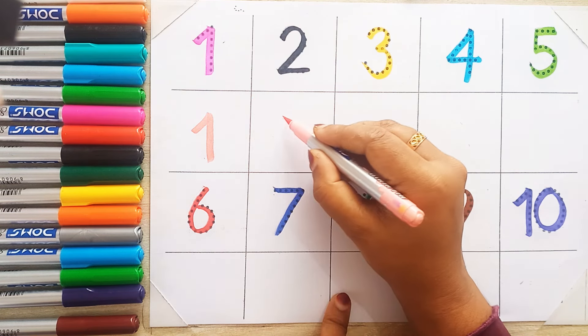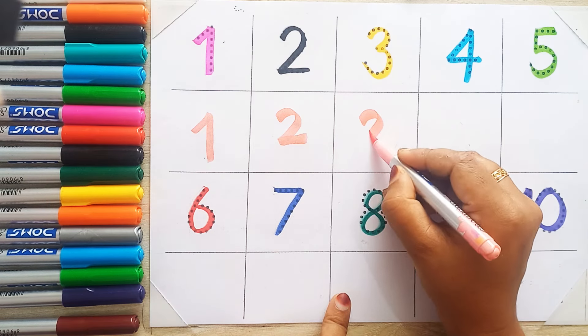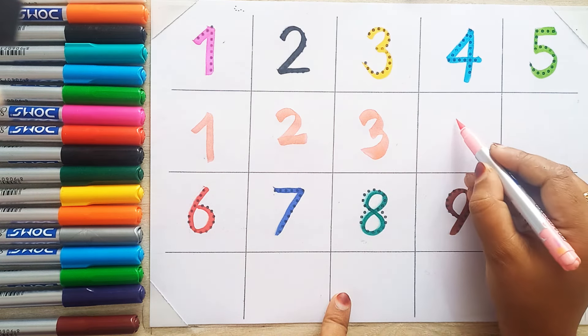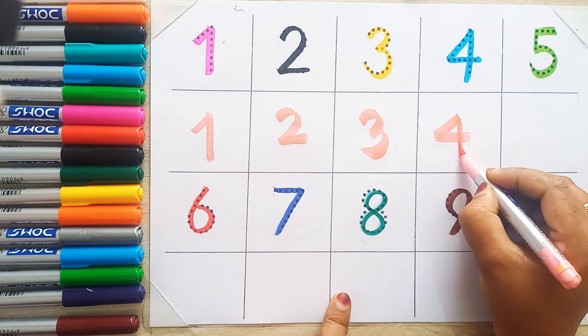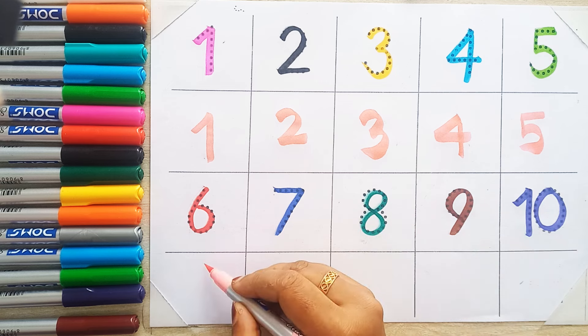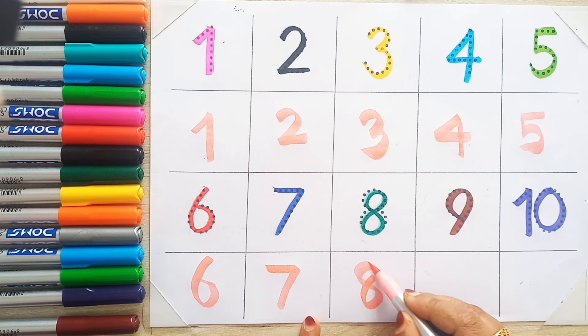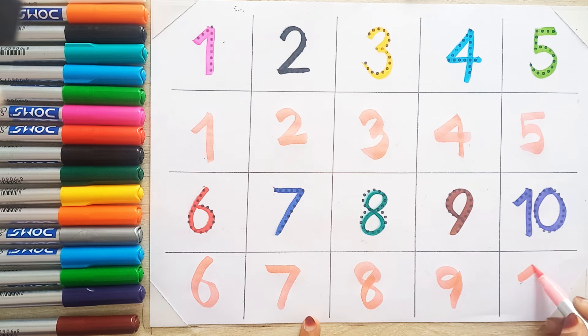One. One. Two. Three. Four. Five. Six. Seven. Eight. Nine. Ten. Ten. Ten.